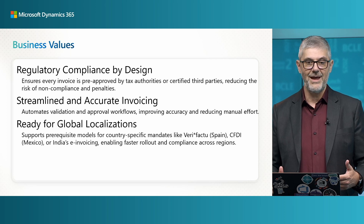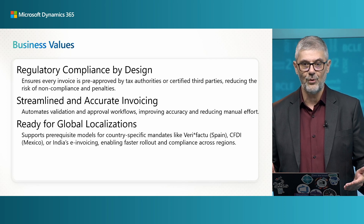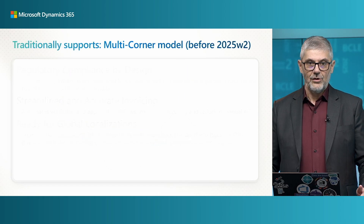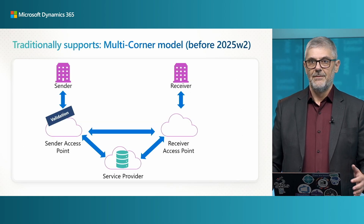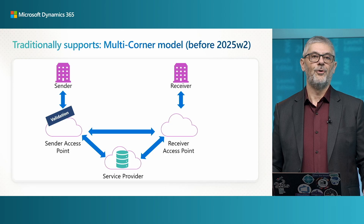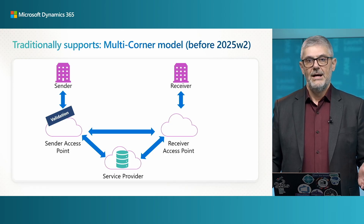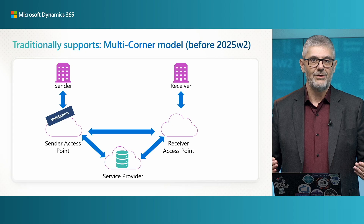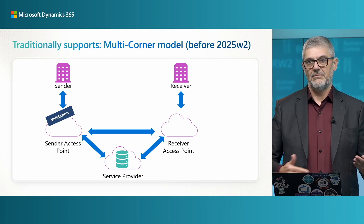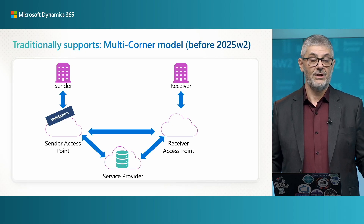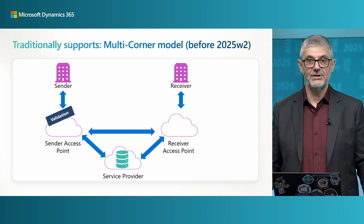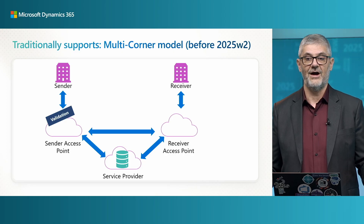Such as Verifact 2 in Spain, CFDI in Mexico, India invoicing, and so on. Traditionally, before this wave, we supported the multi-corner model. In general, this is a four-corner model, but in some cases it can be used for five-corner models as well. So it can support three-corner, four-corner, and five-corner models.